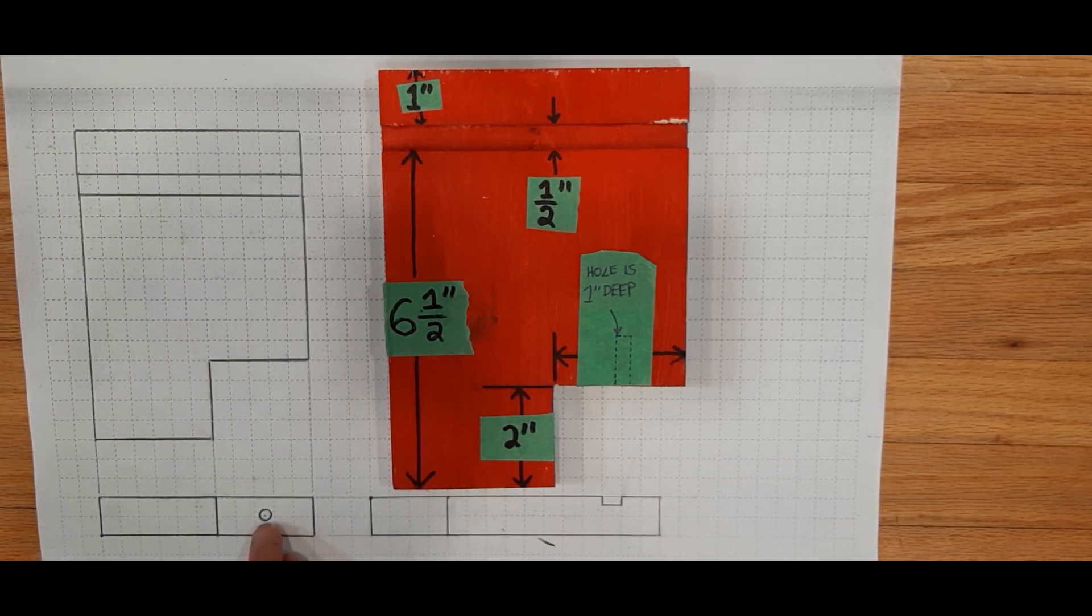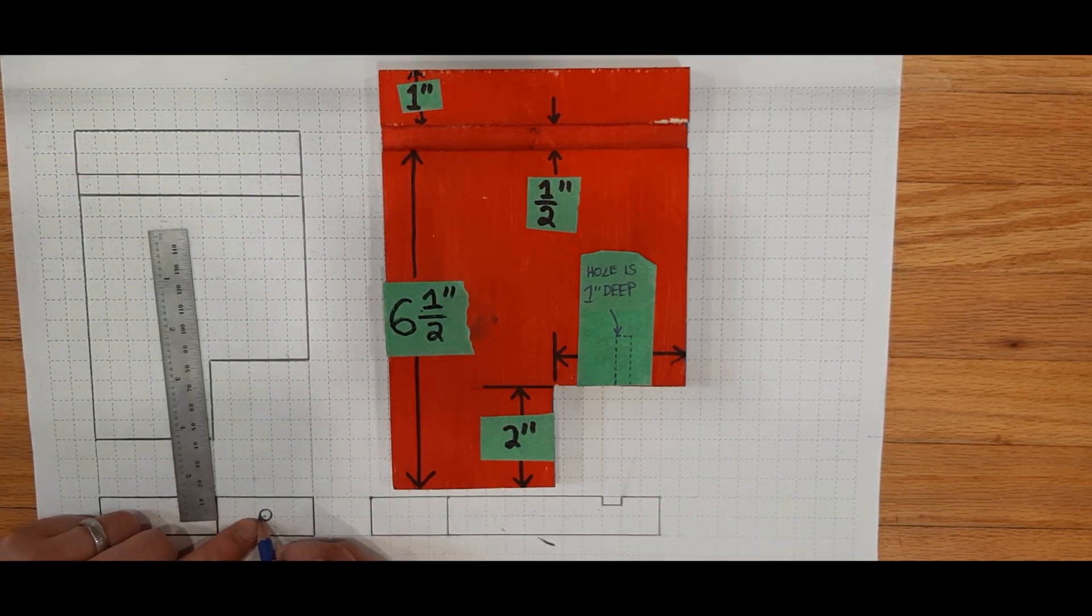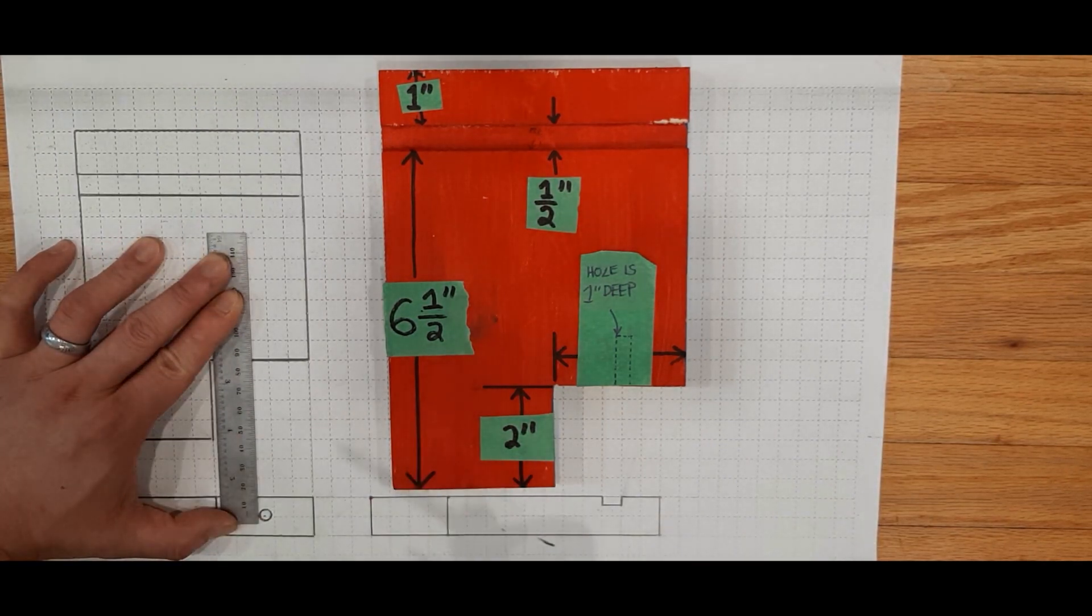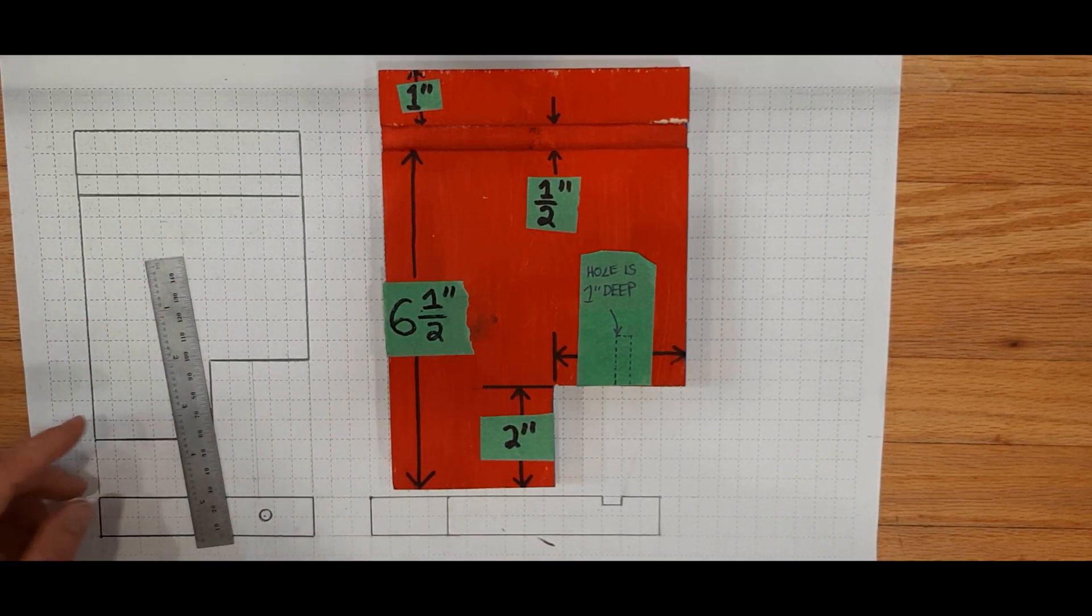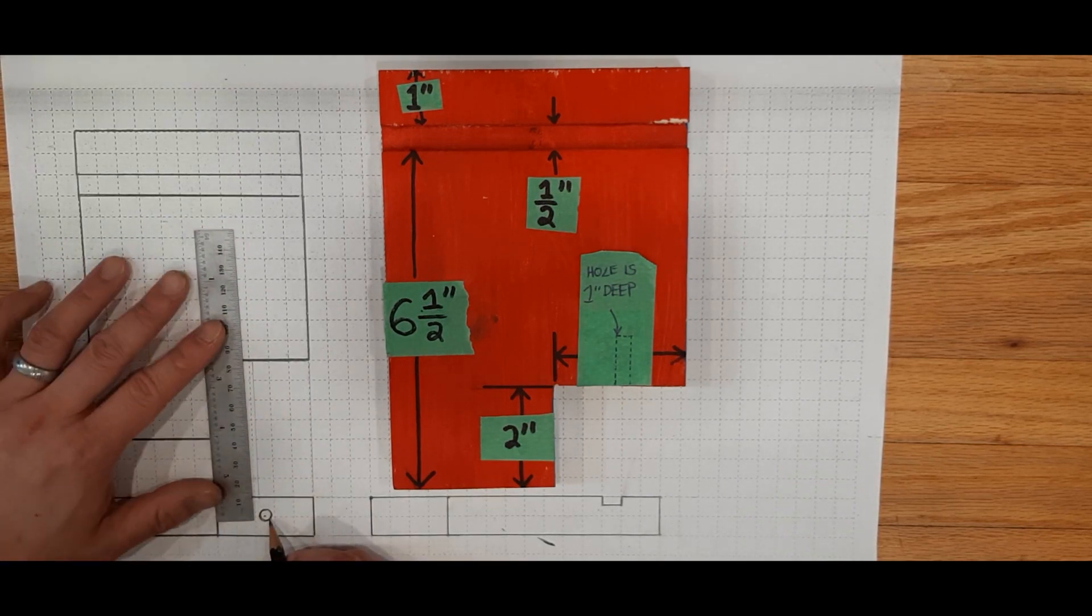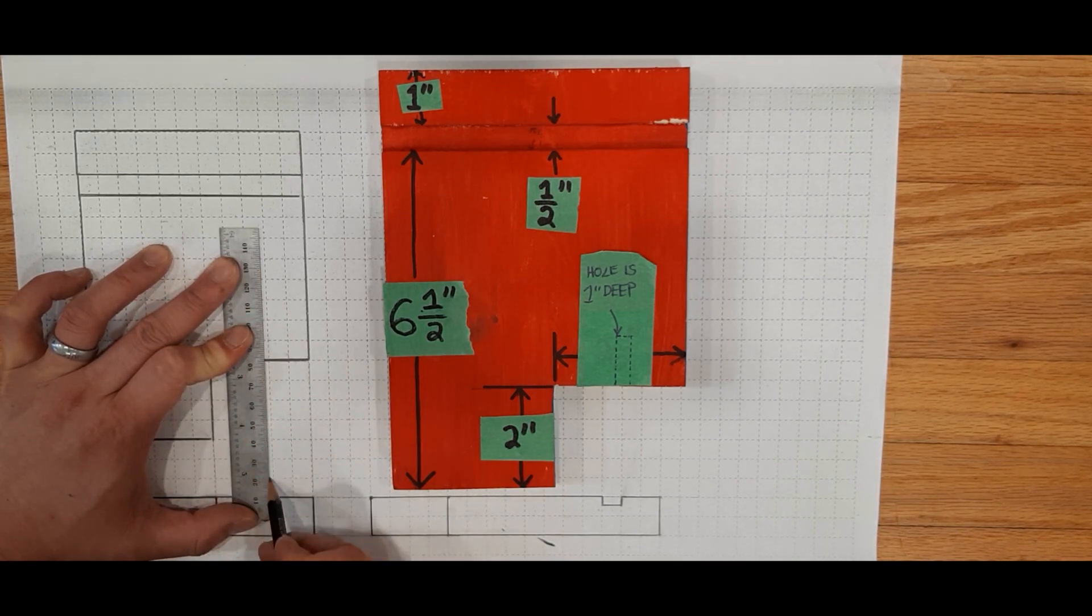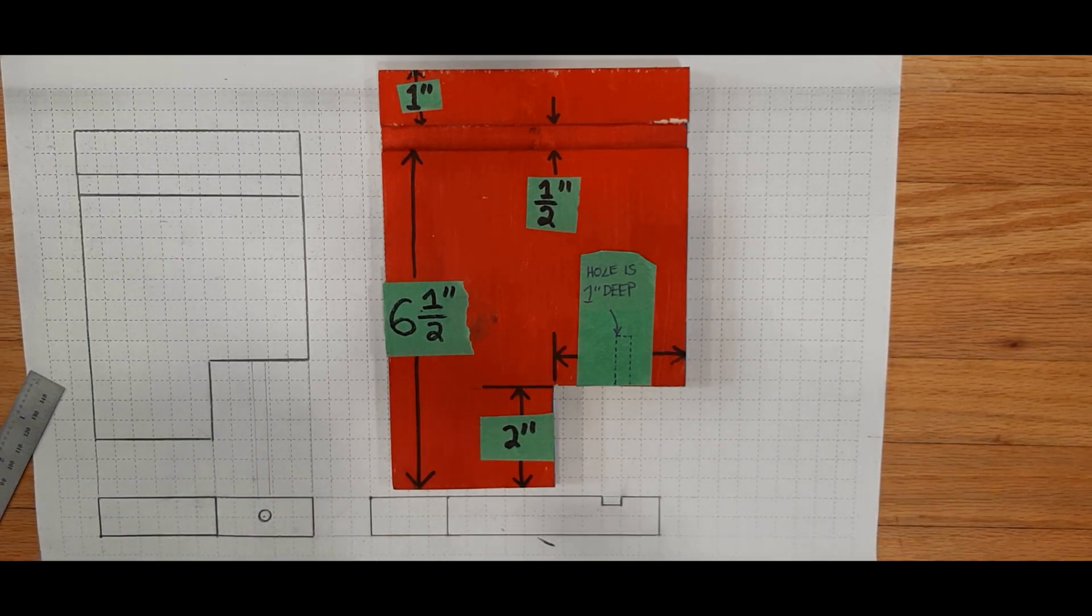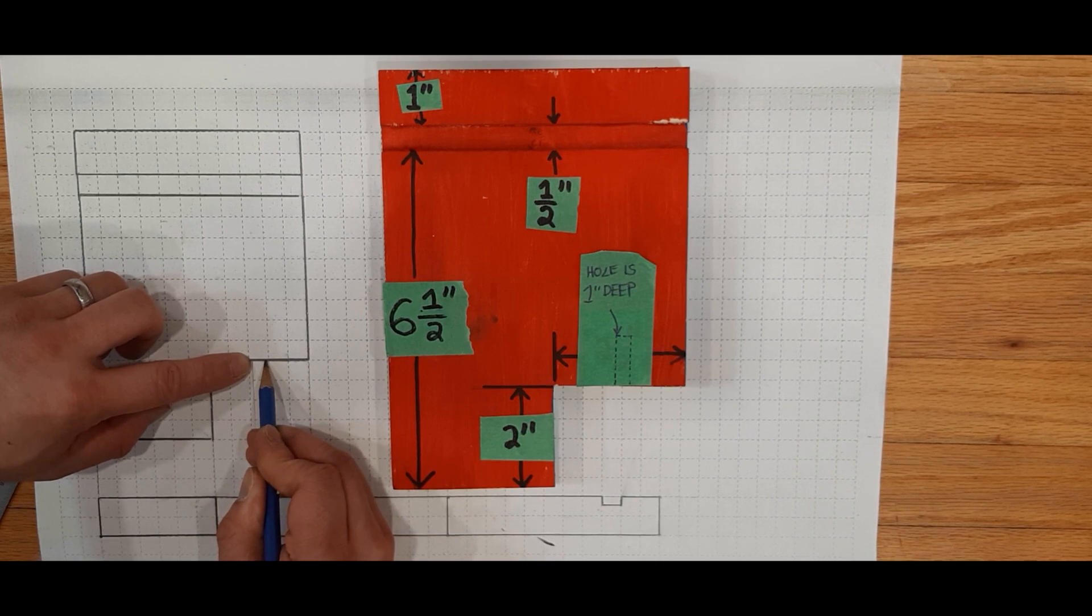So to draw the hidden lines for the hole on this view here, go to the leftmost point of the hole, which is here, and draw a light projection line. As you can see, this is exactly the same as when you drew the top view. Next, you're going to do the same thing with the rightmost point of the hole. With these two projection lines, we know the left part of the hole starts here, and the right part of the hole starts here.